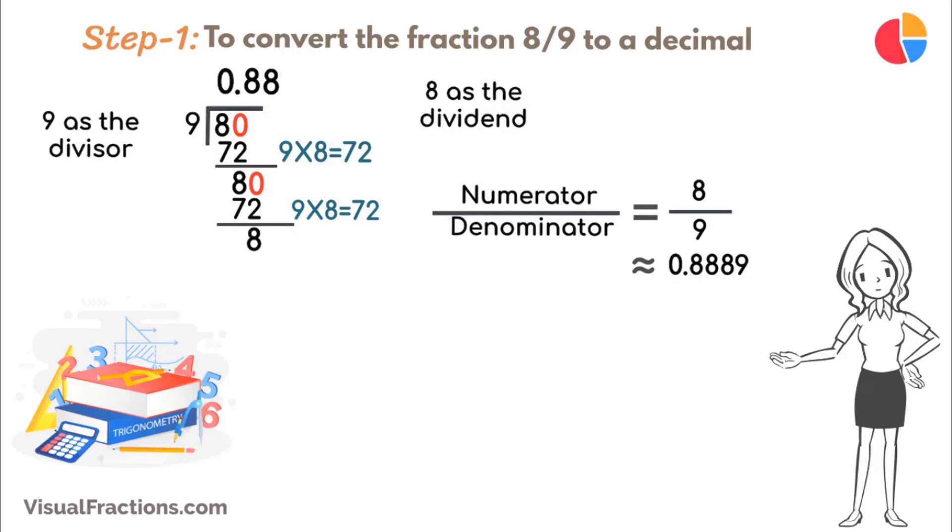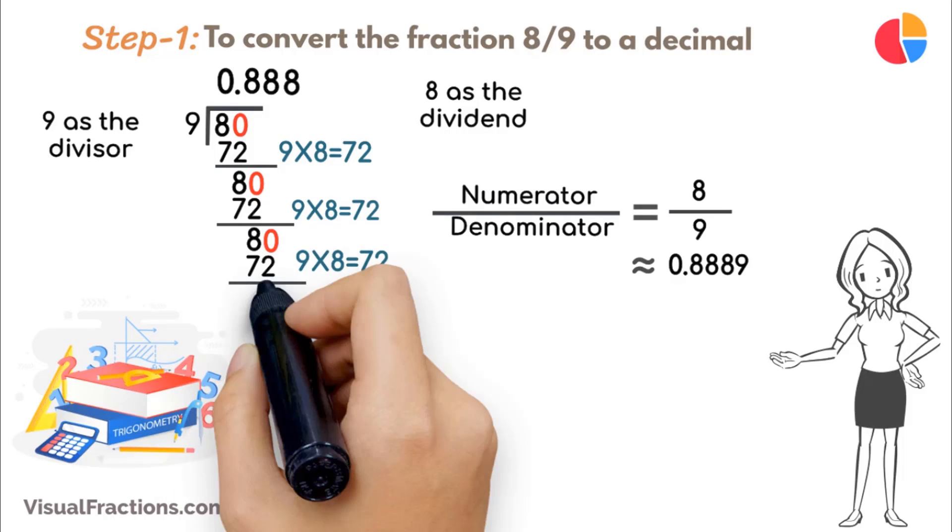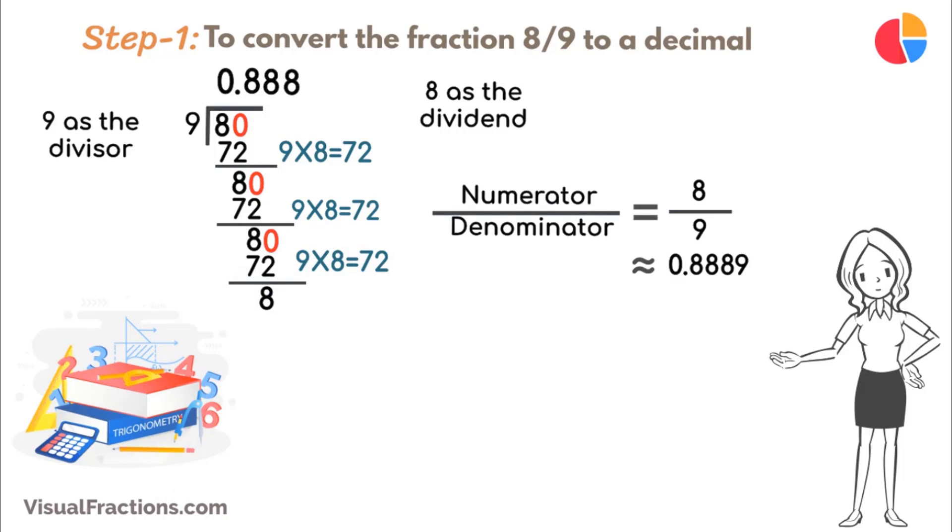This pattern continues with the remainder consistently returning to 8, and the same calculation repeating. Each time, 9 goes into 8 8 times, adding more 8s in the quotient, establishing a repeating decimal sequence. Thus, the decimal extends as 0.8889, and so forth.